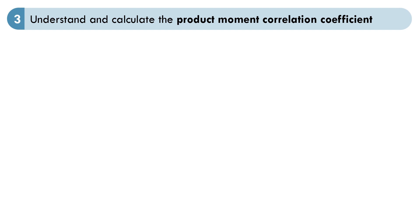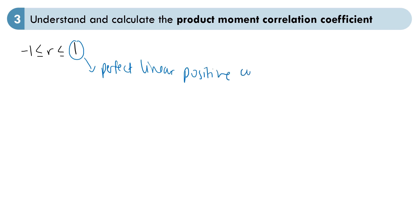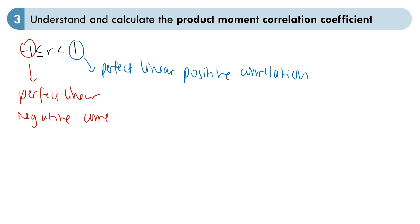The next part of the chapter concerns the product moment correlation coefficient, which is a value between minus 1 and 1, written as r. If r equals 1, that shows perfect linear positive correlation. If r equals minus 1, this is perfect linear negative correlation. For values of r close to 0, we can say there is no linear correlation, although there may still be a non-linear relationship between the variables, as we saw with the exponential models.